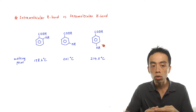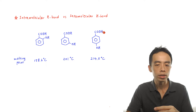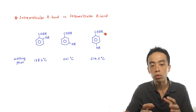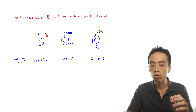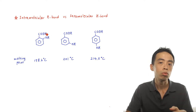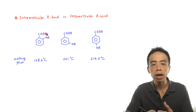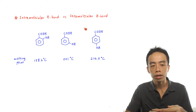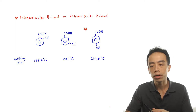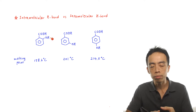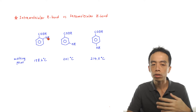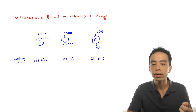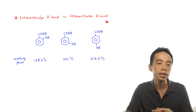All three isomers are capable of forming hydrogen bonds. What is interesting is that the position of the OH group and the acid group with respect to each other somehow affects the intermolecular bonding between these molecules, and in turn affects the melting point. We want to explain why when the OH group is closer to the acid group, it affects the extent of intermolecular hydrogen bonding in these compounds.